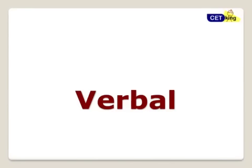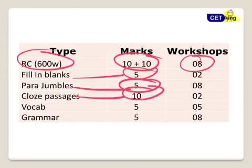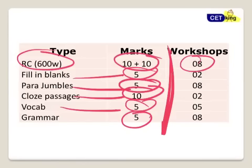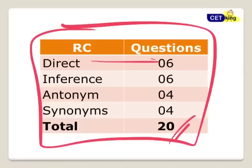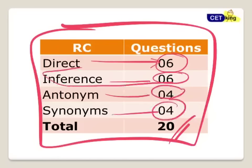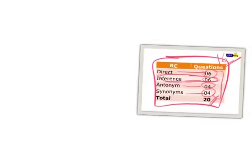Moving to the next area — the verbal section, which is the weak area for almost everyone. The main topic is RC, which is ignored by everyone. Trust me, 90% of people leave RC in the exam because they think RC will be difficult. But if you use the right strategies, we can solve RC in half the time. I am going to have 8 workshops on that — 20 questions. Fill in the blanks 5 questions, parajumbles 5 questions, cloze passages, vocab based questions, grammar based questions. Grammar is normally always easy.